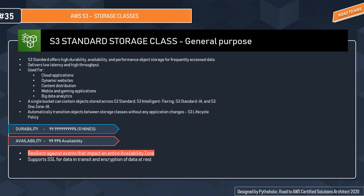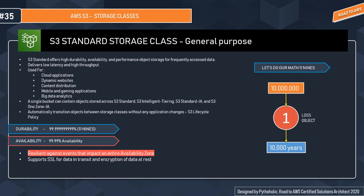S3 Standard is designed for a durability of 99.999999999% (11 nines) of objects across multiple availability zones, and 99.99% availability over a given year. To put the 11 nines in perspective: if you had 10 million objects, there would be a loss of only one object every 10,000 years.